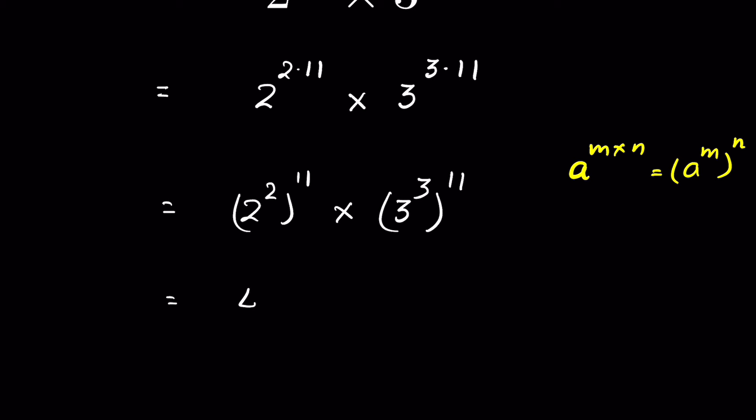2 to the power 2 is 4, so 4 to the power 11, then times 3 to the power 3 is 27, then whole to the power 11.